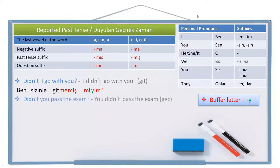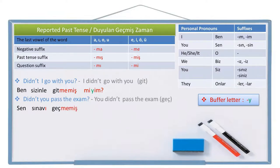Didn't you pass the exam? This is the negative question sentence. You didn't pass the exam is the negative sentence, and pass is 'geç' in Turkish. Person pronoun you is 'sen', exam is 'sınav', the exam is 'sınavı', pass is 'geç', not pass is 'geçme', didn't pass is 'geçmemiş'. Leave a space and write the question suffix 'mi' and the person pronoun suffix to the end. Sen sınavı geçmemiş misin? Didn't you pass the exam?